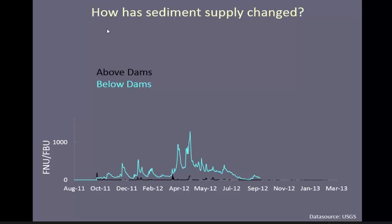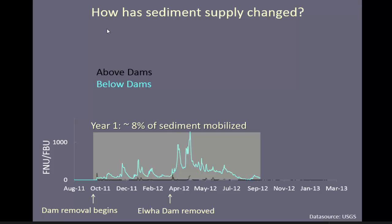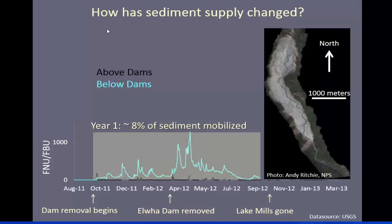One of the main questions was how has the sediment supply changed. On this graph, the x-axis is date, the light blue is suspended sediment levels below the dam, and the black is above. Within one year from the beginning to the end of the Elwha Dam removal, about 8% of all the sediment was mobilized — just from the Aldwell Reservoir or lower dam. Once Lake Mills, the upper reservoir, was gone, the river had access to all that sediment and that's really when suspended sediment levels increased significantly.